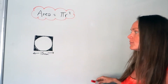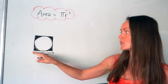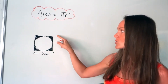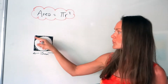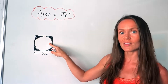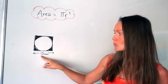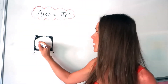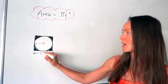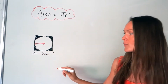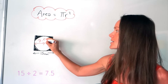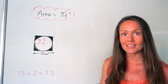In this question, they've told us the length of the side of the square. And since the circle touches all of the sides, we know the diameter of this circle must also be 15. So to work out the radius, you just half the diameter — half the number 15 — so the radius is 7.5 centimetres.